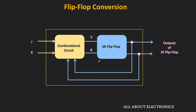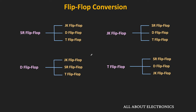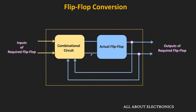In this flip-flop conversion, we may not always require connecting the output of the flip-flop back to the combinational circuit, but in general this is the basic block diagram of the flip-flop conversion. Since we have four types of flip-flops, we have a total of 12 different possible flip-flop conversions. In this video, we will see how to convert the SR flip-flop into the JK flip-flop, D flip-flop, and the T flip-flop. Now let us start with the SR to JK flip-flop conversion.